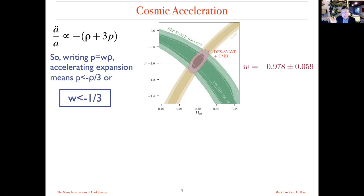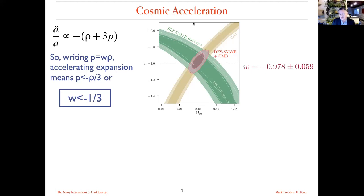What does data actually tell us? We have much more precise data now — here are results from the Dark Energy Survey three-year supernova results combined with microwave background results. These are somewhat orthogonal to one another. Plotting this in a plane where the vertical axis is w and the horizontal axis is the total matter fraction, the contours home in close to minus one, but certainly far away from minus one-third. The universe is certainly accelerating, and fitting the data gives w ≈ -0.9, or almost -1, plus or minus some error bars.